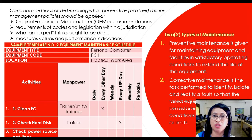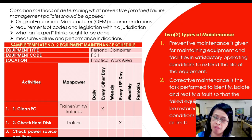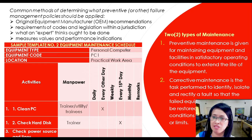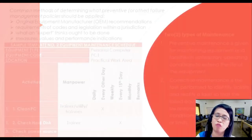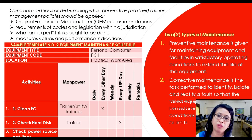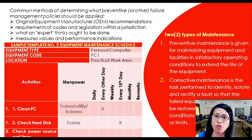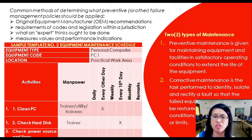What are the common methods of determining what preventive or other failure management policies should be applied? We have the OEM, or original equipment manufacturer requirements; requirements of codes and legislation within our jurisdiction; what an expert thinks ought to be done; and measured values and performance indicators. There are two types of maintenance: preventive maintenance and corrective maintenance. Preventive maintenance involves the things we need to do to avoid faults or errors. Corrective maintenance addresses what you need to do when an actual fault has already arisen.